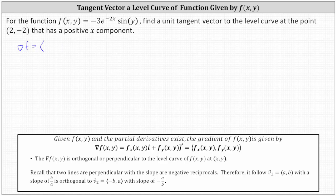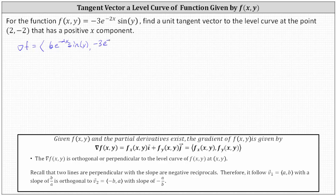The derivative of negative three e to the negative two x times sine y with respect to x, treating y as a constant, is equal to negative three e to the negative two x times negative two times sine y, which is six e to the negative two x sine y. And the y component is equal to the partial of f with respect to y, which means we differentiate f with respect to y, now treating x as a constant. The partial of f with respect to y is negative three e to the negative two x times cosine y.